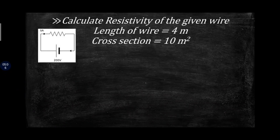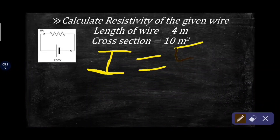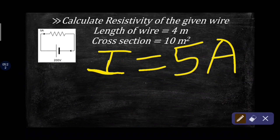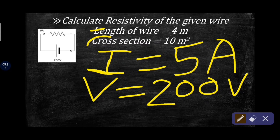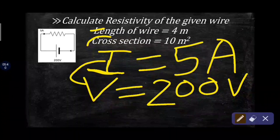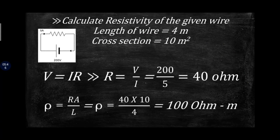Calculate the resistivity of the given wire. You are given current of 5 ampere. First, since you have length and cross-section given, you only need resistance. Calculate resistance using Ohm's law form, and after that calculate resistivity. Pause the video and try to solve the question. The value of resistivity is 100 ohm meter.